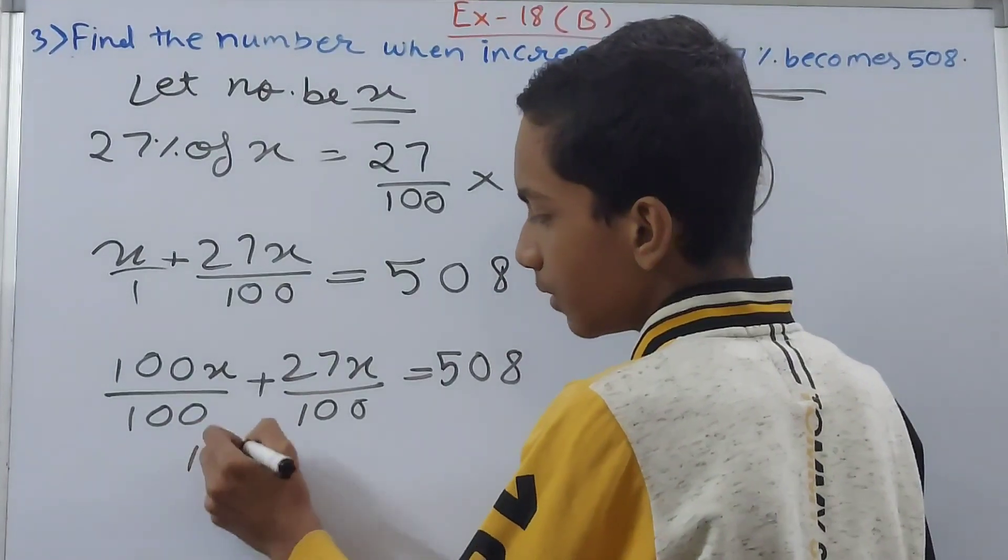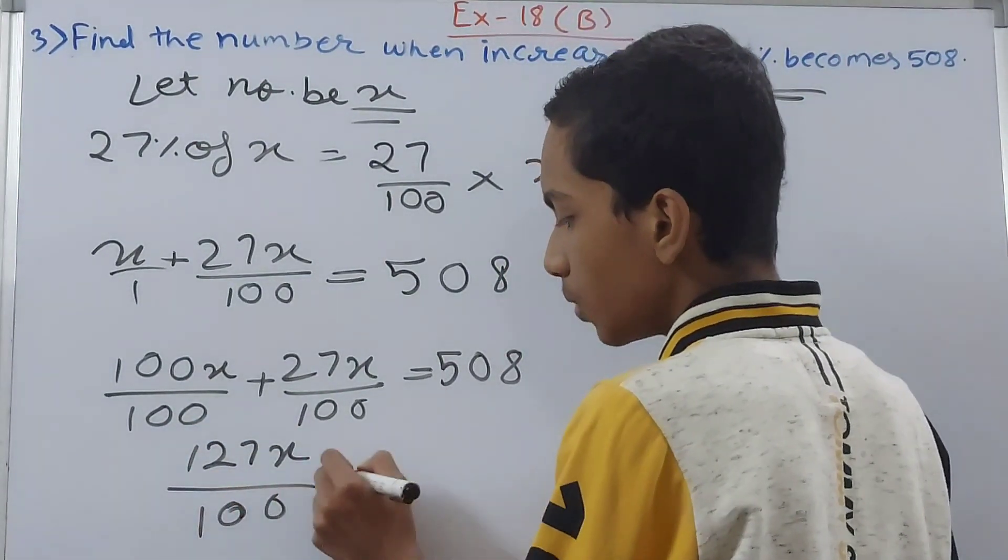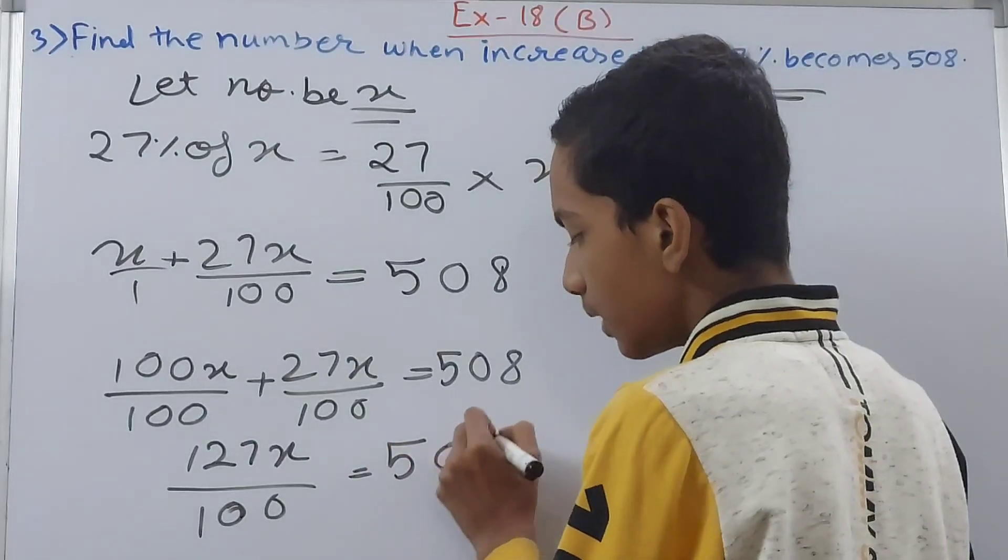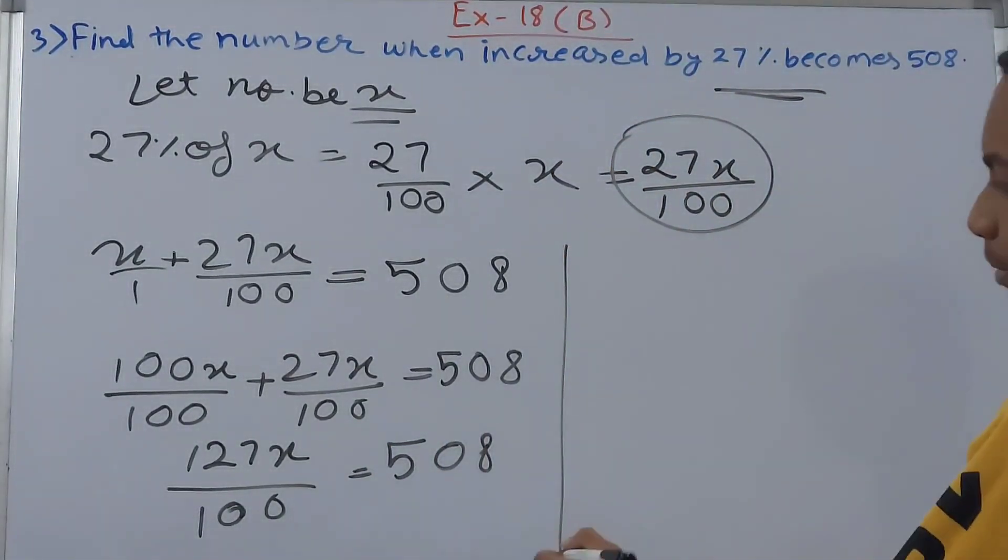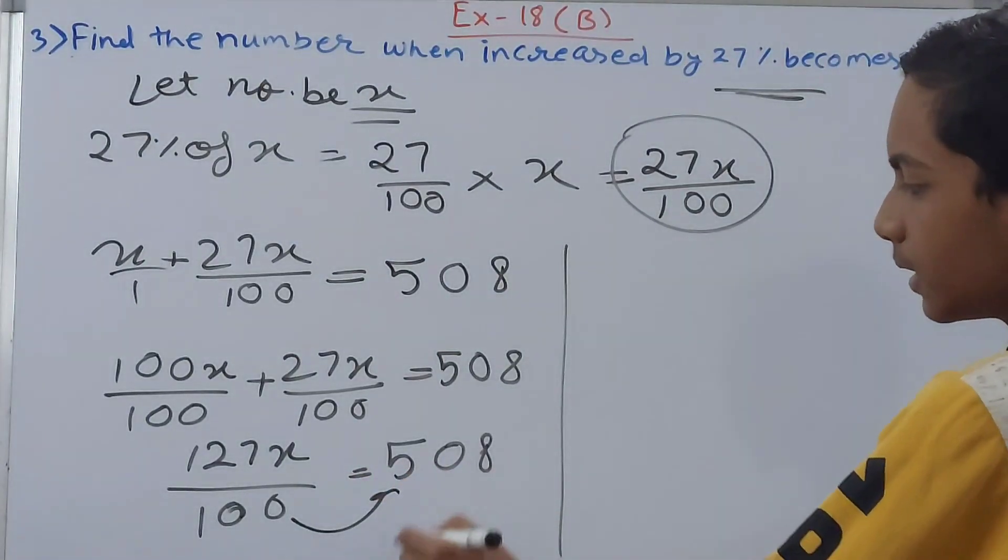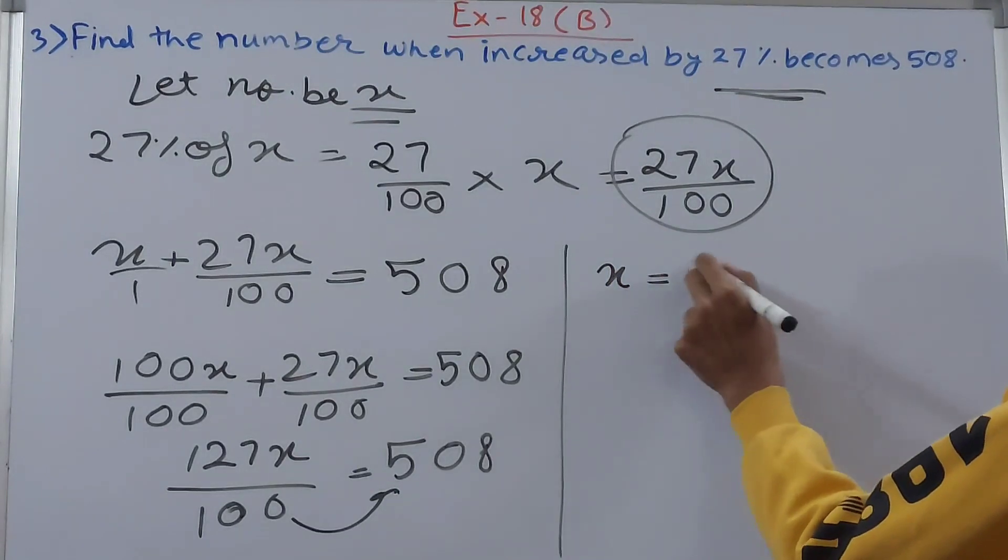So what will this become? Let's see, 100x plus 27x becomes 127x upon 100 equals to what? 508. So let's solve this now.